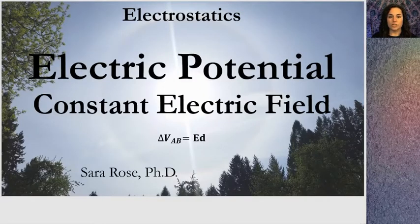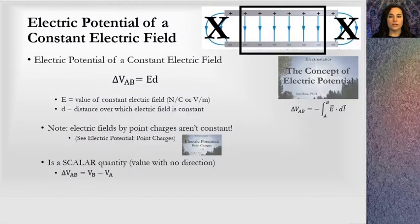This is a lesson on electric potential for a constant electric field in the unit on electrostatics. In a prior lesson I talked about the concept of electric potential and how it's a mathematical definition of the relationship between the electric field and the ability of that field to do work on a charge if there were a charge in the field.